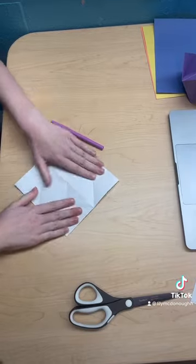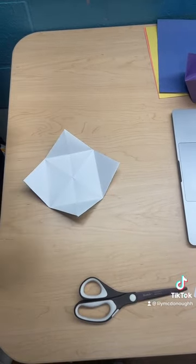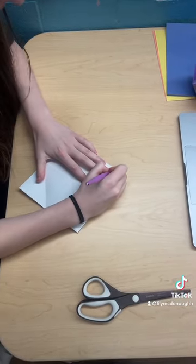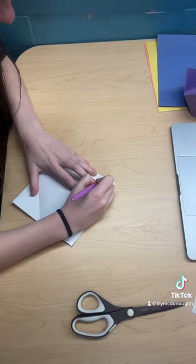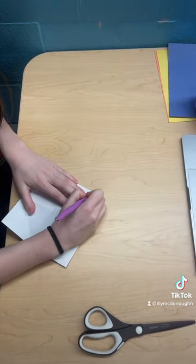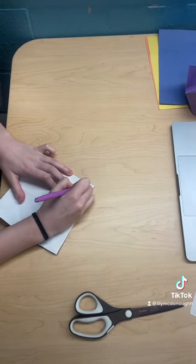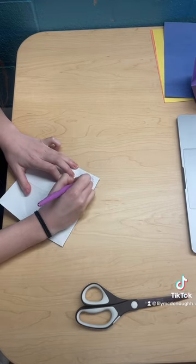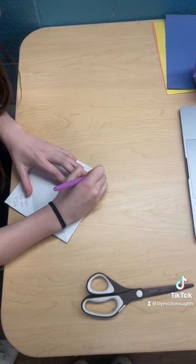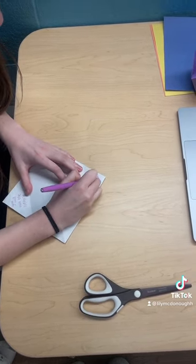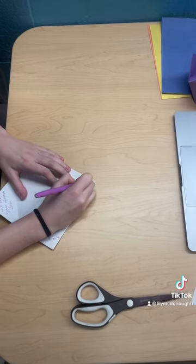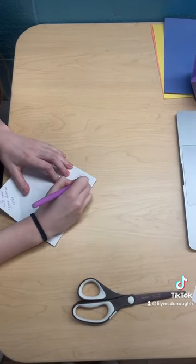we're going to unfold it right here, and these triangles that are facing upwards, this is where we write our fortunes. I'm going to write for my fortunes: you will win the lottery, you will have your dream job, you will become famous, and you will have a lot of pets.